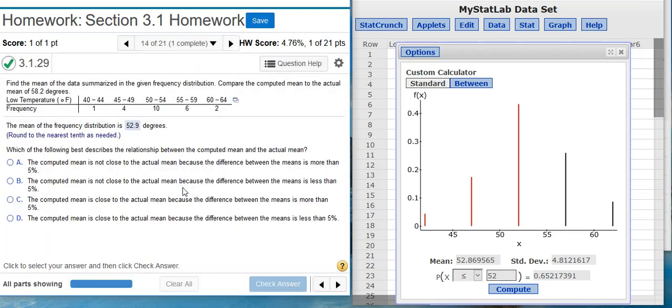And now, the second part of the problem, which of the following best describes the relationship between the computed mean and the actual mean? So if we look at our answer options here, the computed mean is either close or not close to the actual mean, and then the difference is being compared to 5%. So we're either more than 5% or less than 5%. So if I come back here to my calculator, let's compute the actual difference so we know what we're looking at.